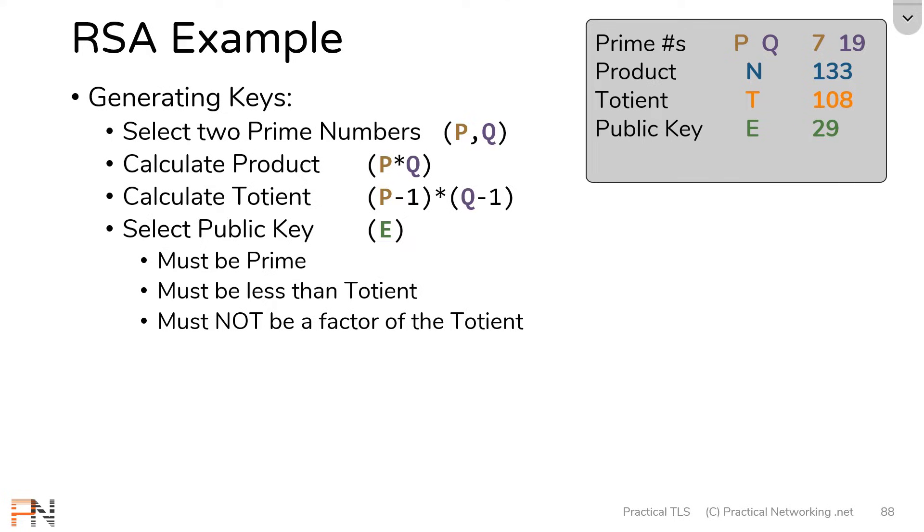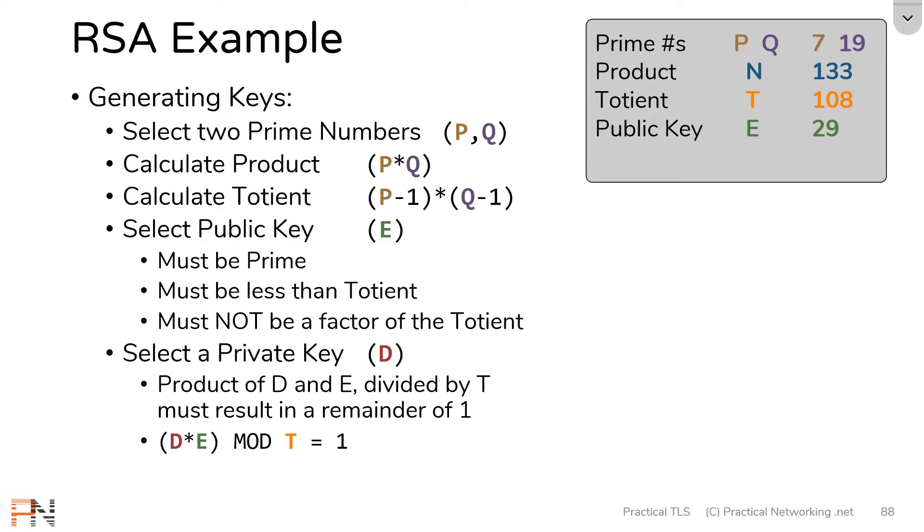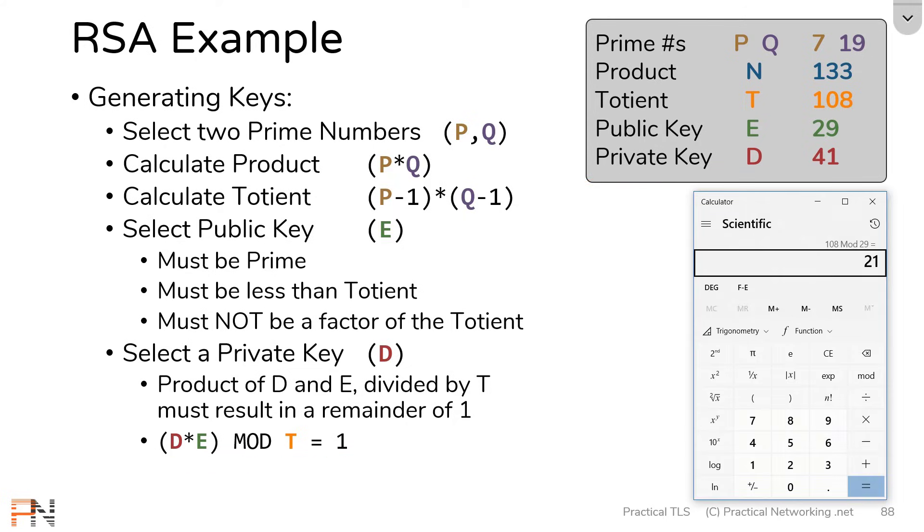And now that we have a public key, we can do the last step, which is to select a private key. Now the private key must only match one condition, but it's a slightly more involved condition. The private key must meet this condition: if you multiply the private key and the public key, and then divide it by T, our totient, the remainder must be 1. Another way of looking at it is it must make this statement true. Now for the sake of these slides, we're going to use the private key value of 41. But let's go ahead and punch it through this formula to see if it meets that condition. I'm going to take my private key, which is 41, and I'm going to multiply it by my public key, which is 29. And then I'm going to figure out the remainder when divided by the totient, which is 108. If I hit enter, you'll notice the result is one, which means the private key value of 41 does indeed match this condition.